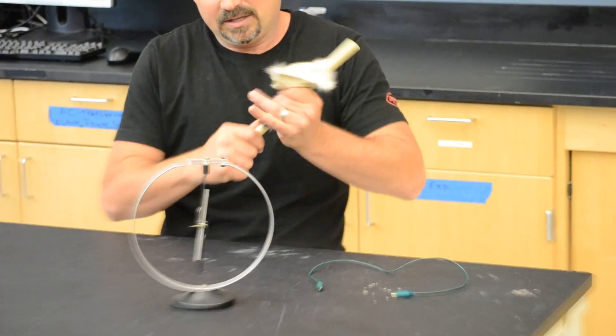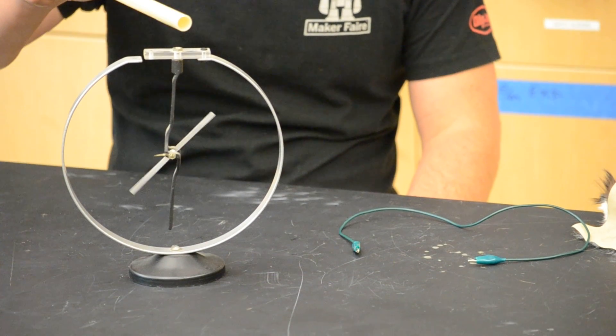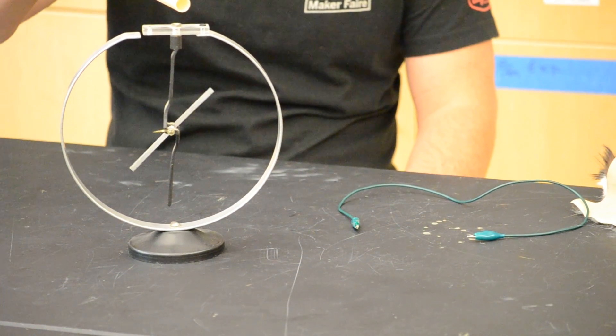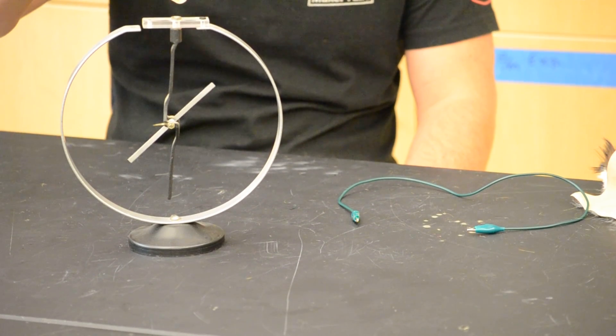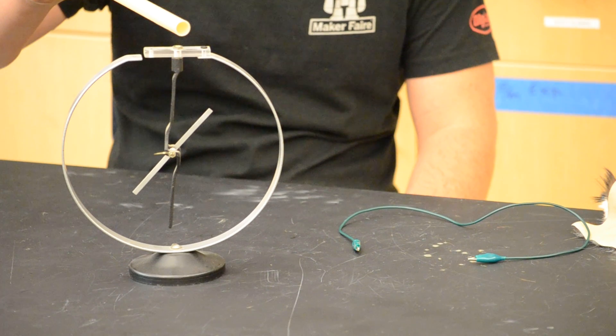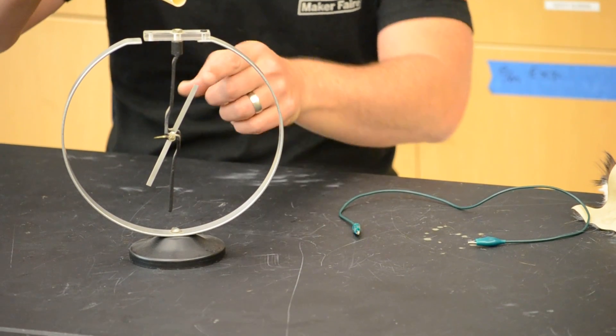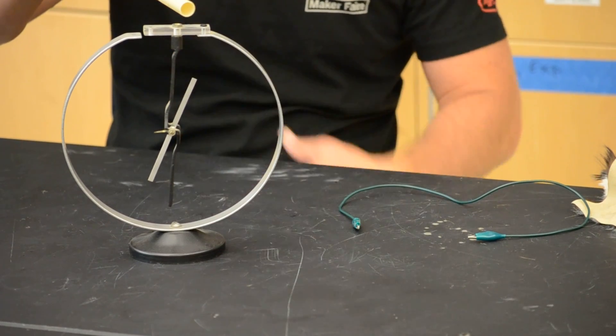As I bring the rod close, you'll notice that it repels away. I'm not making physical contact. Charge is not moving. What's happening is the excess electrons up here are repulsing the electrons in the object downward, thus you have excess of electrons down here, and they repel.